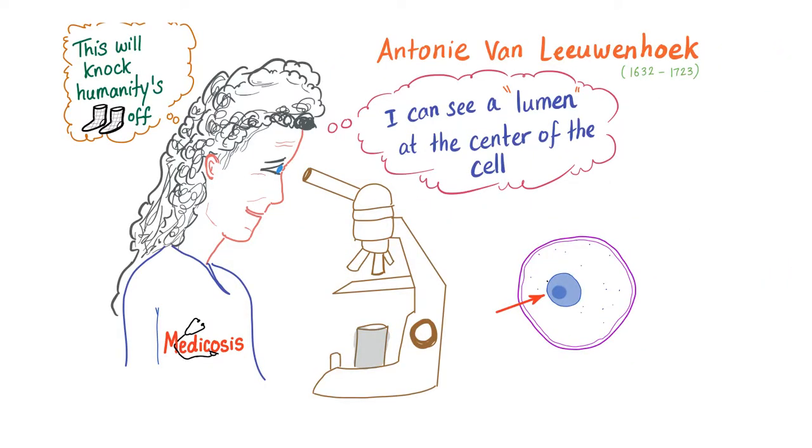About 300 years ago, Anthony van Leeuwenhoek was sitting in the laboratory, looking at the cell under the microscope, when he discovered something that he described as a lumen at the center of the cell. And then we call this the nucleus. Little did he know that hundreds of years later, students will lead a miserable life trying to study this nut called the nucleus.